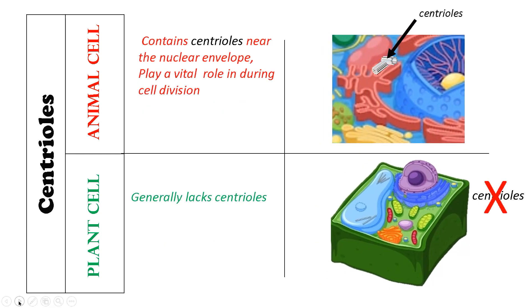The next point of difference is about centrioles. They are very interesting and very small paired cell organelles present outside the nucleus near the nuclear envelope, and they play a very vital role during cell division. On the other hand, in case of plant cells, these centrioles are absent.